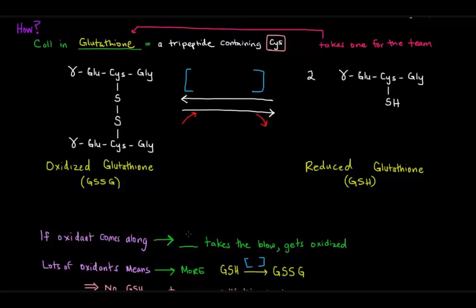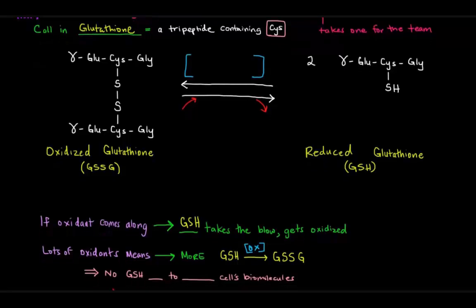So, if an oxidant comes along, then the GSH, the reduced glutathione, will take the blow and it will get oxidized and become oxidized glutathione. Now, if lots of oxidizing agents come along, lots of oxidants, what would happen? Well, that means we'd have more GSH, this reduced glutathione get oxidized into this oxidized form, this oxidized glutathione. So, we'd have a bunch of GSH being oxidized into GSSG.